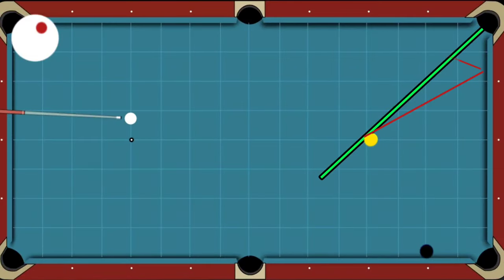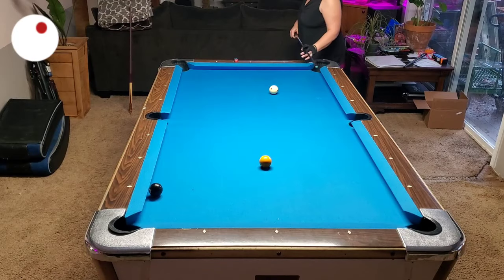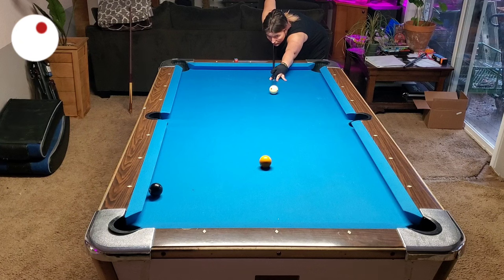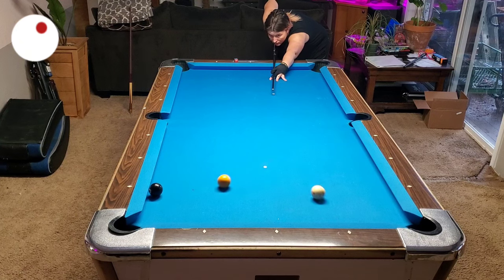I could also use top right to play position on the eight ball. Keep in mind that any time you use English, you have to account for deflection, swerve, and spin-induced throw, which can make pocketing the ball much more difficult.